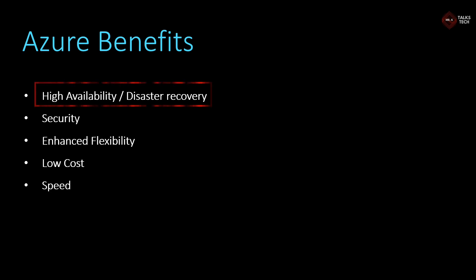I will start with high availability or disaster recovery. Microsoft gives around 99.9% SLA, which stands for service level agreements, when you use any Azure services. This means that if you use any services from Azure, it will be available almost 100% of the time even when there are any updates or changes happening to the services. This leads to high availability of using these services.